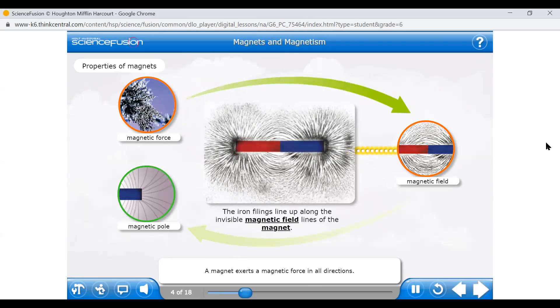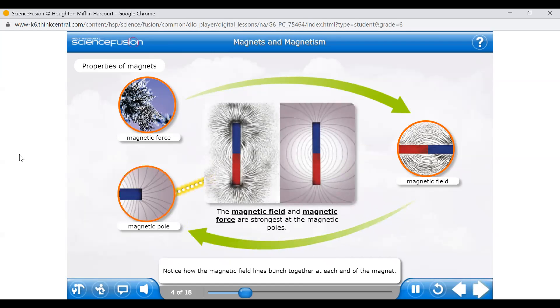A magnet exerts a magnetic force in all directions. The region where magnetic force is exerted and can be detected is called the magnetic field of the magnet. You cannot see the magnetic field, but you can see where the field exerts magnetic force on the iron filings. The filings follow the path of the magnetic field. Notice how the magnetic field lines bunch together at each end of the magnet. Note also that the iron filings are most attracted to the magnet's ends. The ends of the magnet are where the magnetic field is strongest and are called magnetic poles. Every magnet has two poles, which have opposite magnetic qualities.